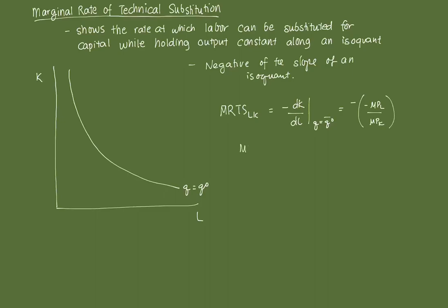And we know from the last video that the slope equals negative MPL over MPK. Therefore, MRTS_LK is equal to MPL over MPK. And MRTS_LK will be positive, since we know that MPL is greater than 0 and MPK is greater than 0. Therefore, MRTS_LK is also greater than 0.